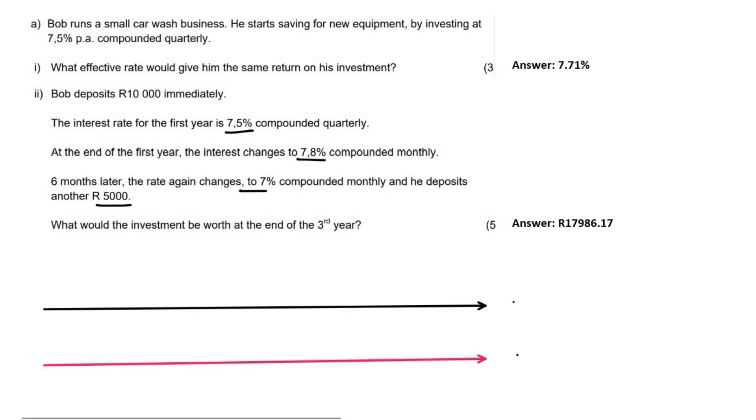I always like to do two timelines. The one is for my payments, and the other one is for my interest rates. So we obviously start at T0, and we know that we're going to end at T3. Now we start off by Bob adds 10,000 Rand. So that's just going to be 10,000 Rand going in over there. Now, let's just look at the payments.